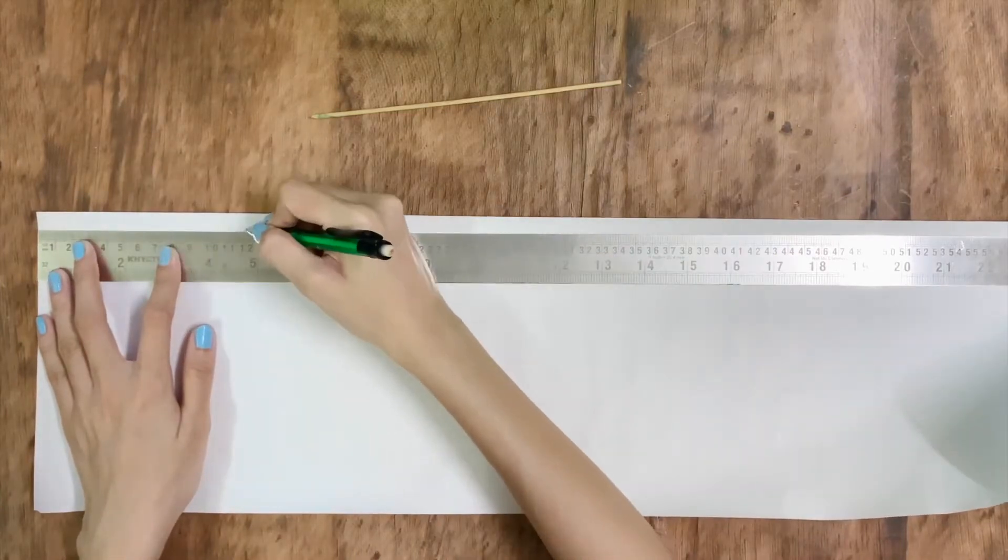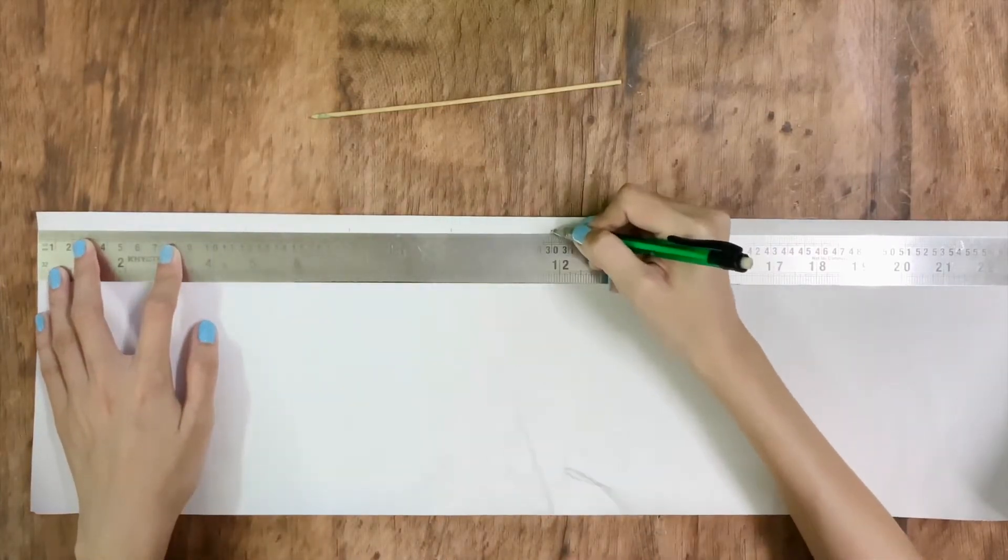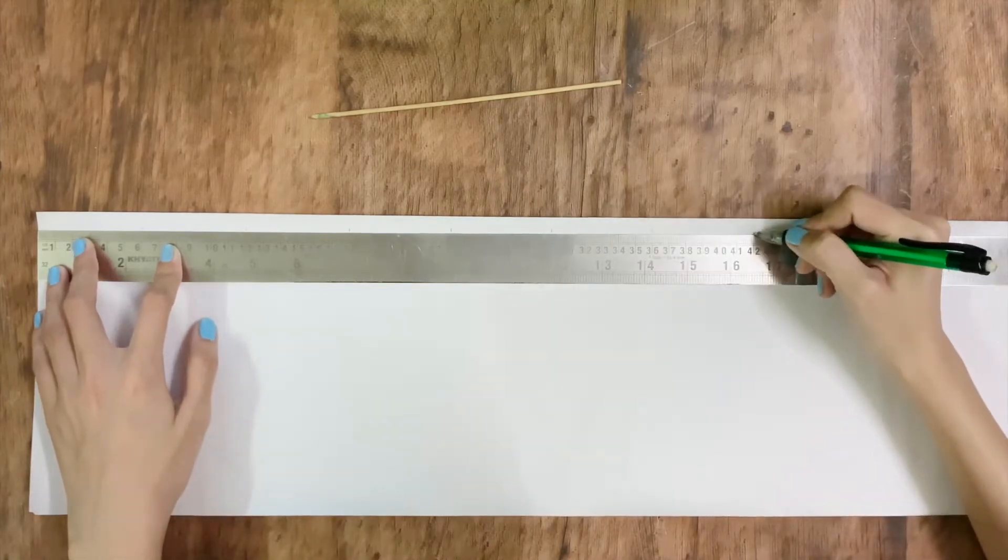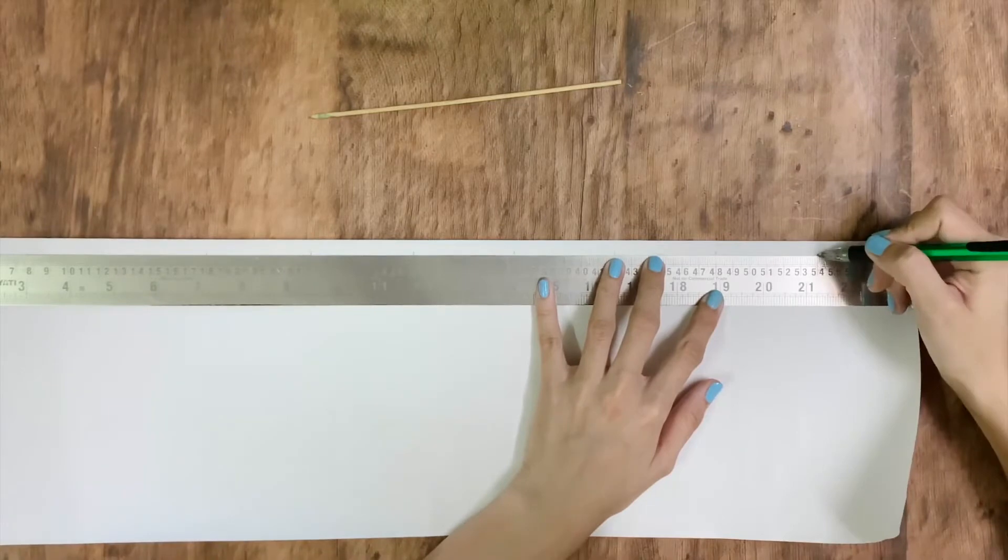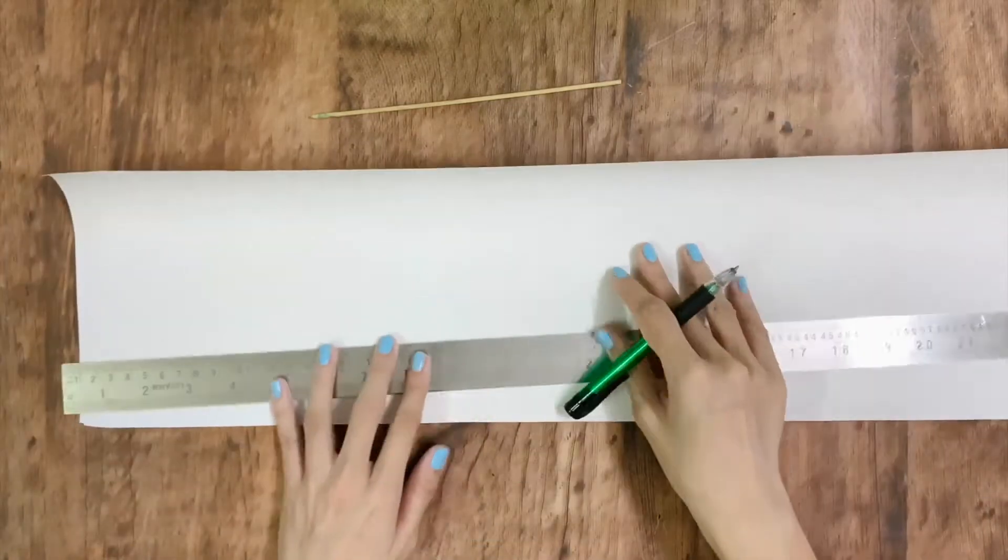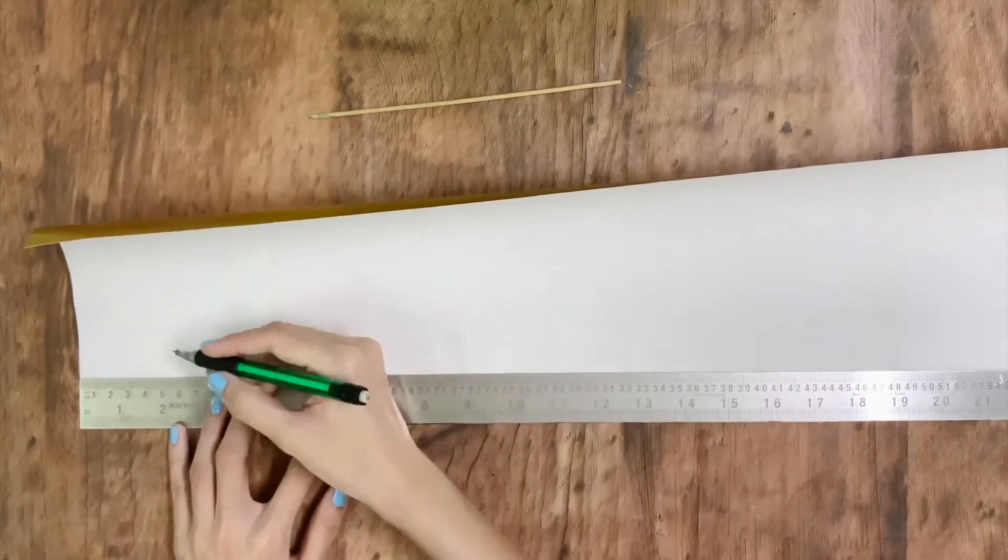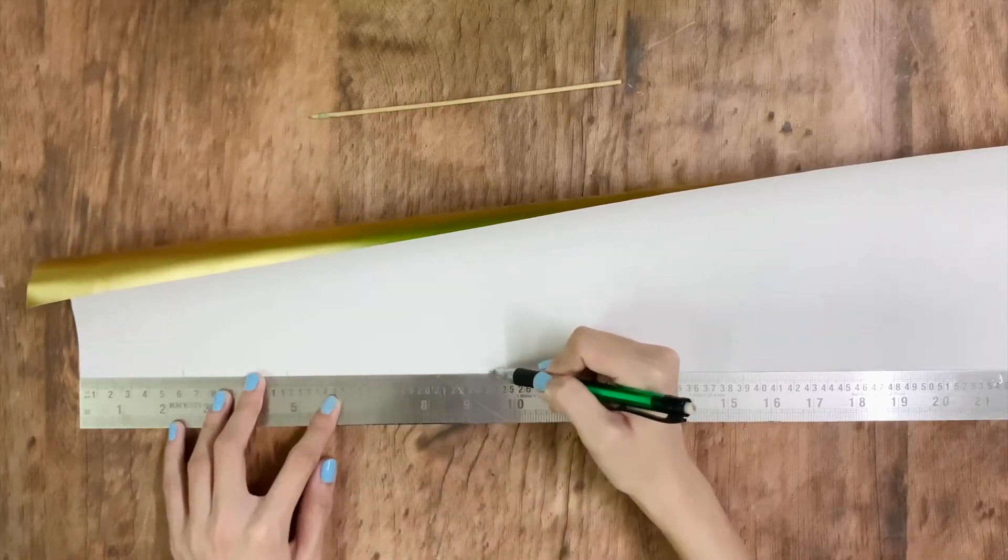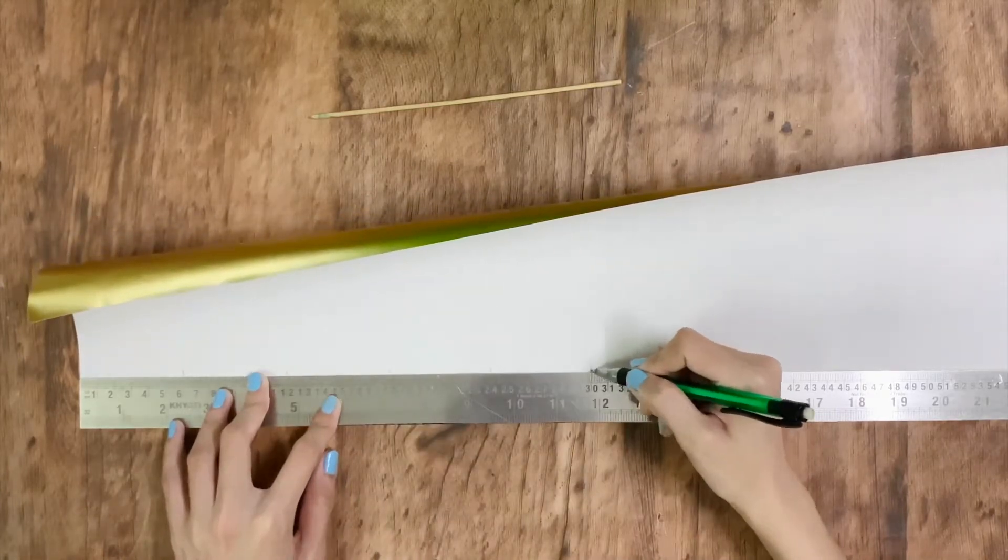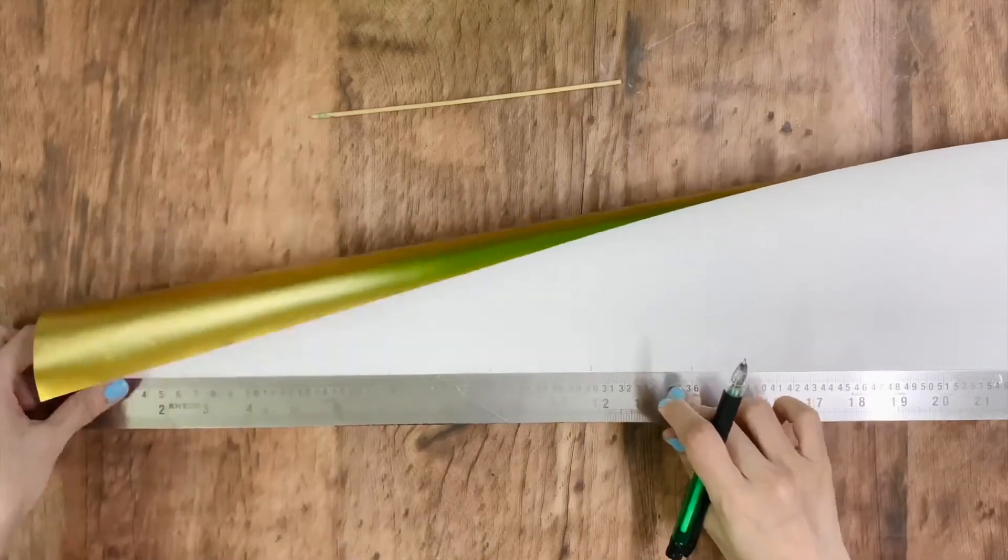The first thing you have to do is divide the paper into parts of 6 centimeters. So my first sheet is of 60 centimeters, so I will divide it into 10 parts of 6 centimeters each. Make two markings like these for more accuracy.